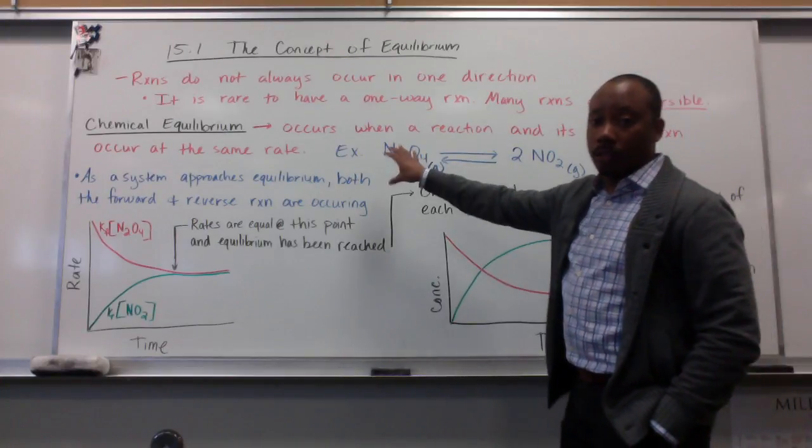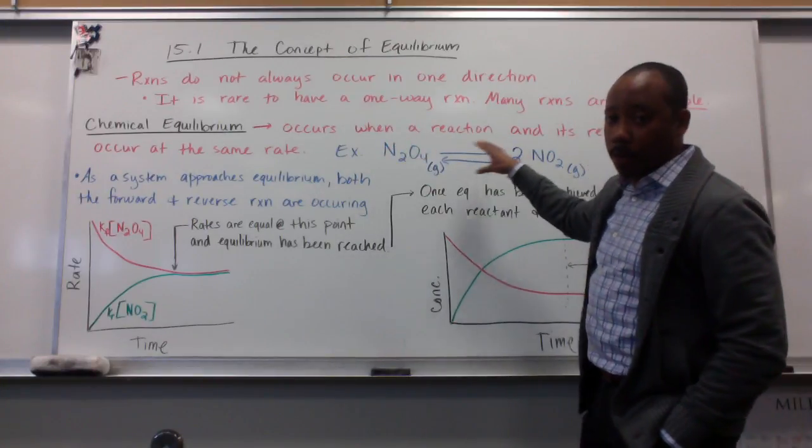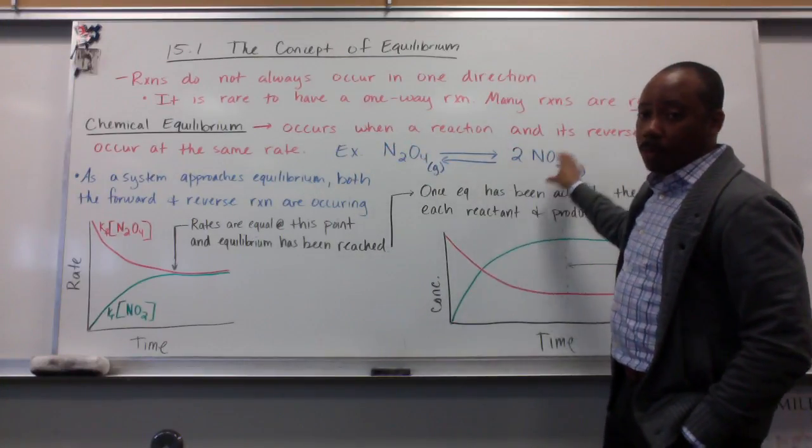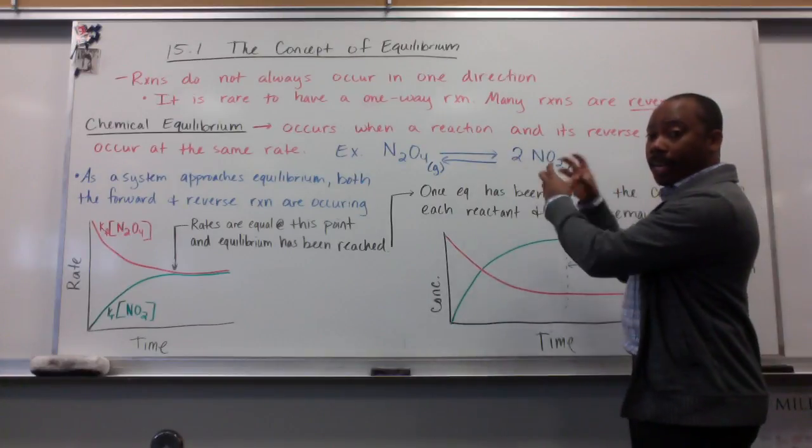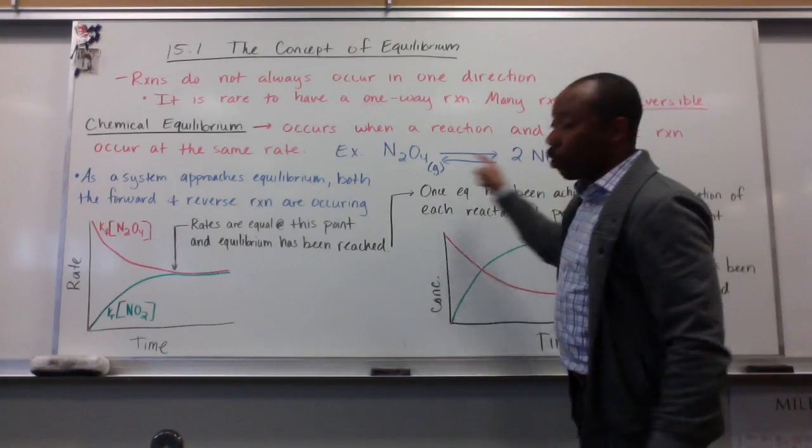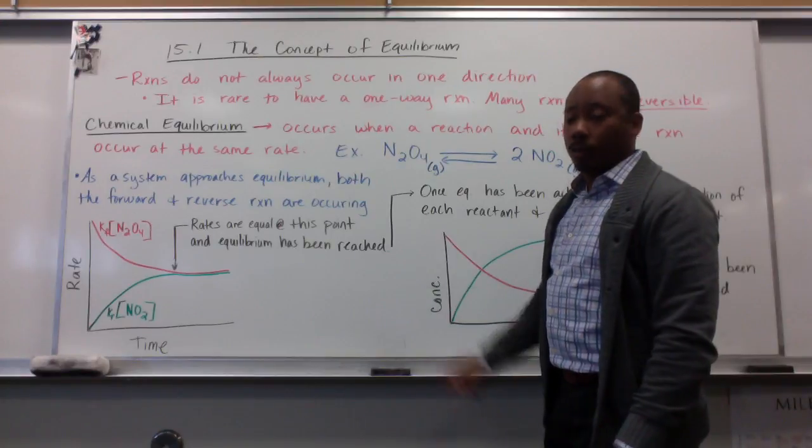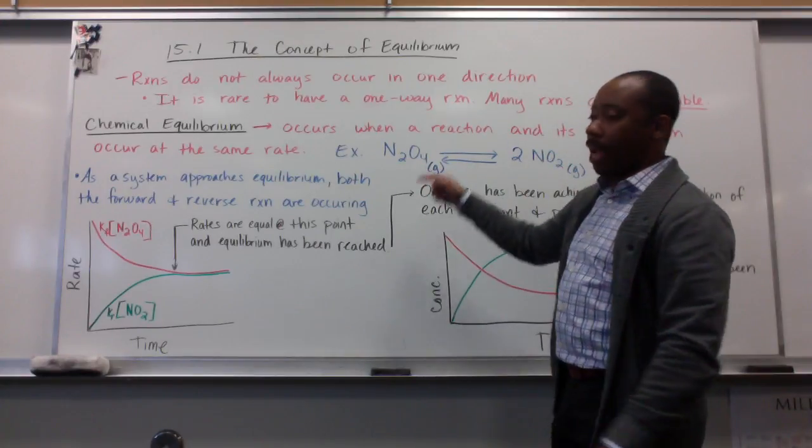At first, we're just creating reactants with product, product, product, product, product. But as I accumulate more product, those products start hitting one another, colliding, and going back to my reactants. So, I have my forward reaction and my reverse reaction.